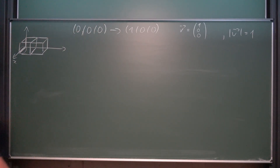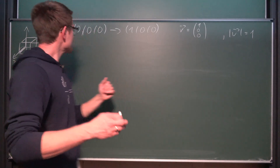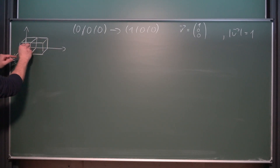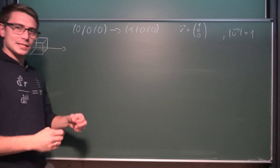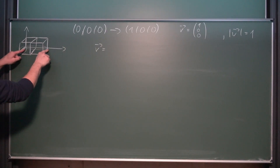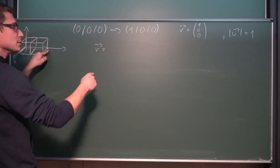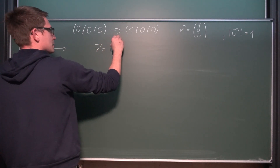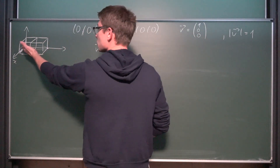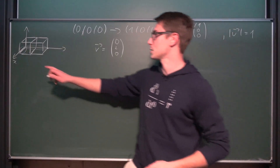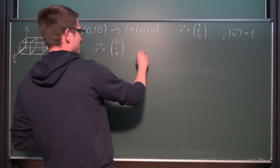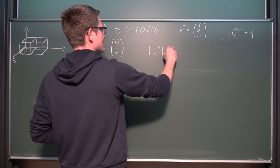Now we continue. What about other side lengths? By the same logic, let us take a look at the longest side length of this double cube. We consider a vector from the origin to the coordinate zero two zero. If we look for the length of this, it's obviously just going to be two, because it's just two times the side length of our unit cube. So the norm of this vector is two.